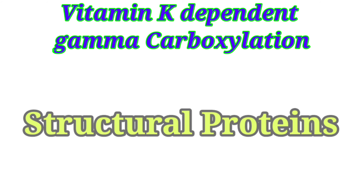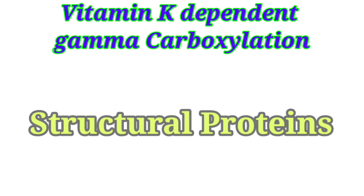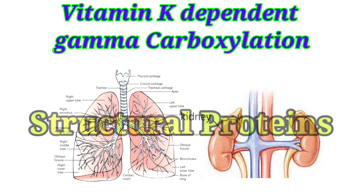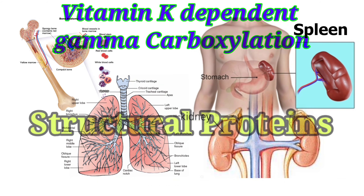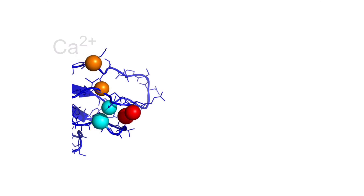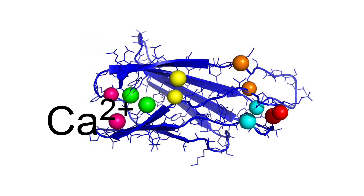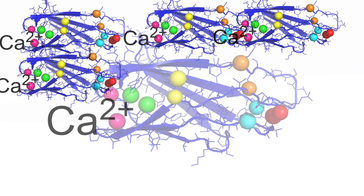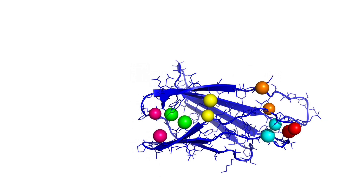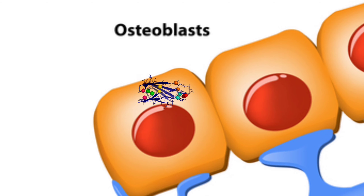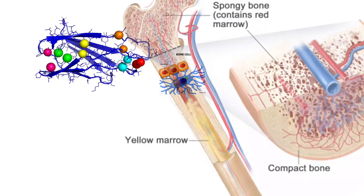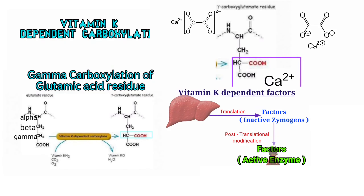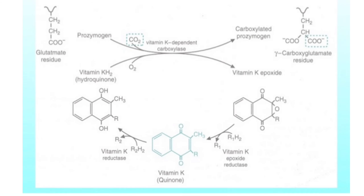This type of vitamin K dependent gamma carboxylation is necessary for structural proteins — the structure of kidney, lung, spleen, and bone. As mentioned, calcium combines with these proteins to become strong and helps in the maintenance of structure. For example, osteocalcin is a vitamin K dependent small protein synthesized by osteoblasts and is found only in bone.